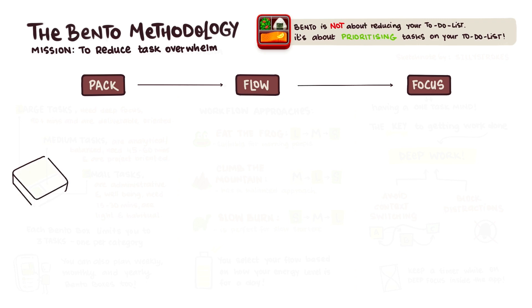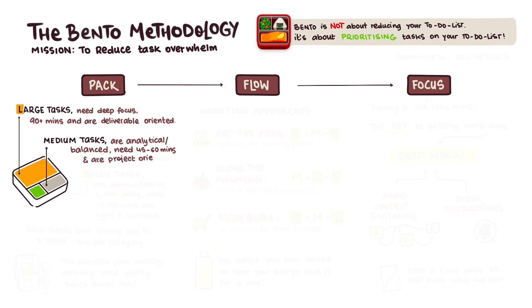Let's dive into the first area: pack. As you can imagine, a bento box is designed into different parts. We've created it so that you can basically organize it as large, medium, and small tasks. Large tasks are essentially ones that need deep focus, 90 minutes plus, and are normally quite deliverable oriented. A medium task is more analytical and balanced, needing about 45 to 60 minutes, and are typically project oriented, helping you to work towards a project. And the small tasks are administrative or well-being related and need about 15 to 30 minutes and typically quite light and habitual.